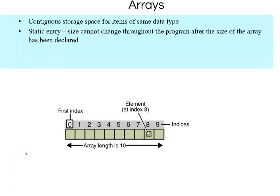An array is a contiguous space of items of the same data type. For example, 10 integers n1 through n10 can be declared as contiguous elements with indices starting from 0 to 9. Each element is an integer, so if size of integer is 4, then 4 × 10 = 40 bytes will be the size of this array.